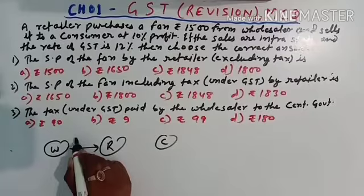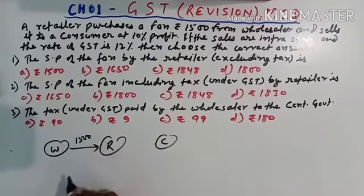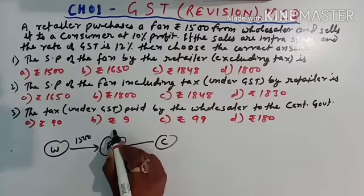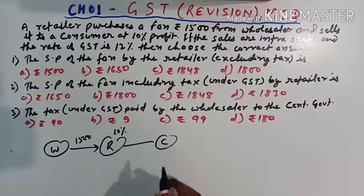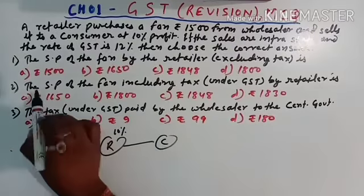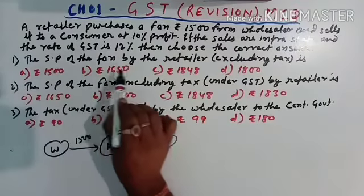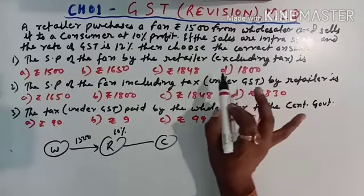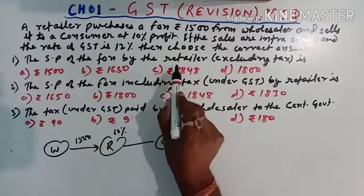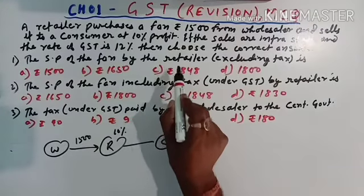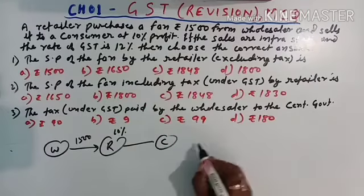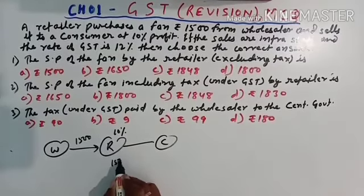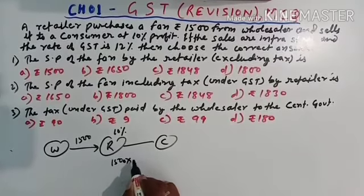What the question says, there is one wholesaler and retailer and consumer. This person sells it to Rs. 1500. Now this retailer has increased the price by how much, by 10%, and then he sells it to the consumer. Now the first question is, find the SP of fan by the retailer excluding tax. That means tax is not included, so for what amount will the retailer sell the fan to the consumer.